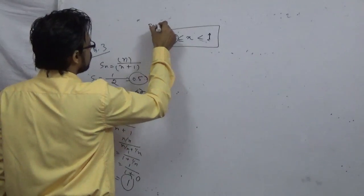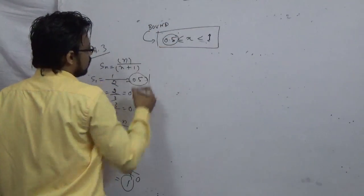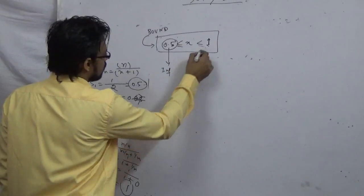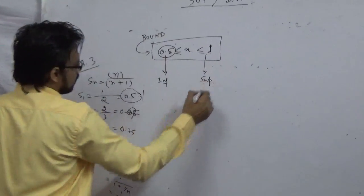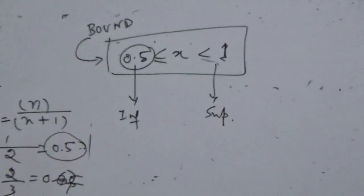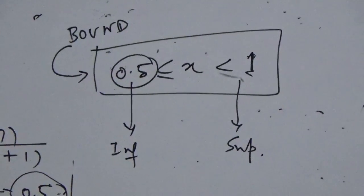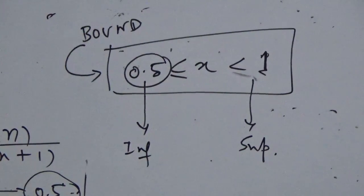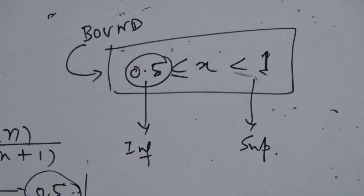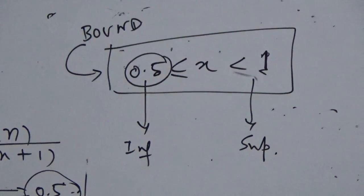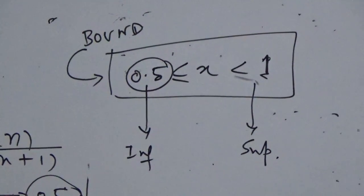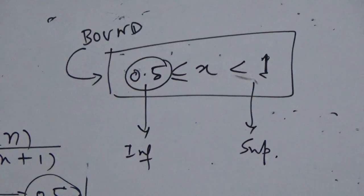So this is a proper bound. If they ask you about the bound, write it as 0.5 less than or equal to S_n less than 1. What is 0.5? Obviously that will be the Infima. So the Supremum is 1 and the Infima is half. You don't have to go deep into theory — whatever the two extreme values come, whichever is less is your Infima and whichever is higher is your Supremum.